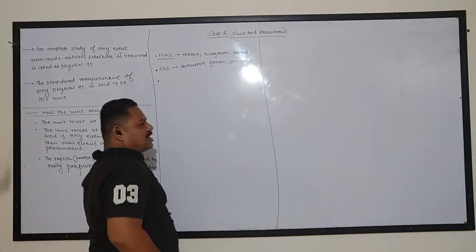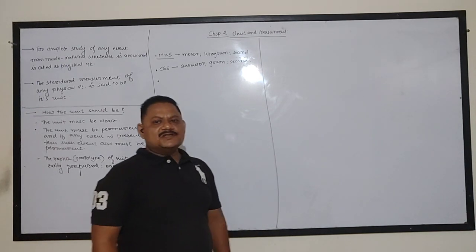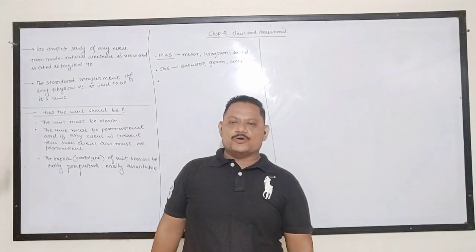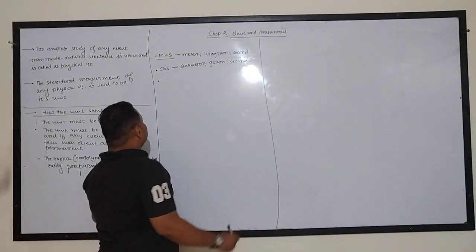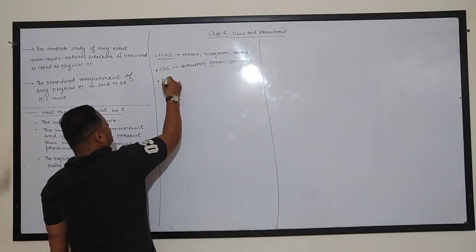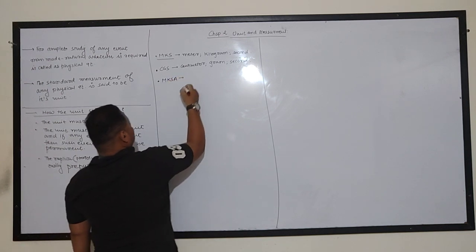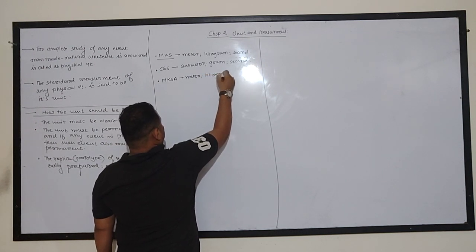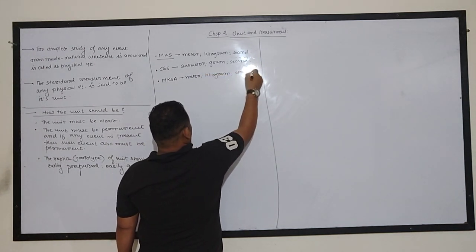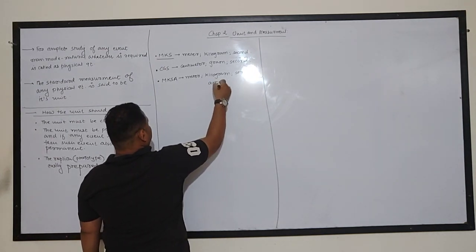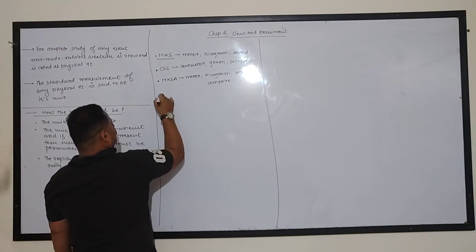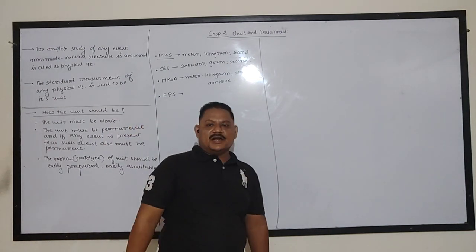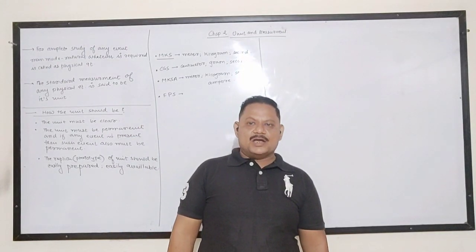As time passed, new physical quantities were developed and new units had to be introduced. So after MKS system came the MKSA system — in which length's unit is meter, mass's unit is kilogram, time's unit is second, and electric current's unit is ampere. The fourth system is said to be FPS.